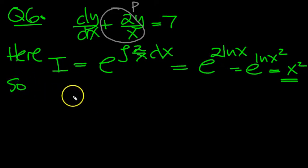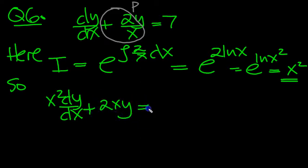So, multiplied by that then, x squared dy/dx plus times this by x squared, one of the x's will cancel, and we'll get 2xy equals 7x squared.